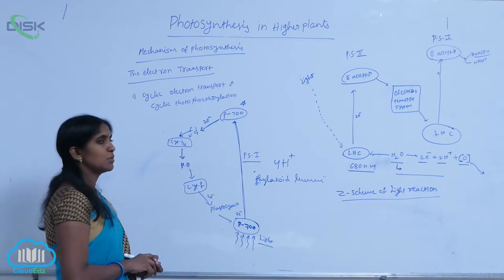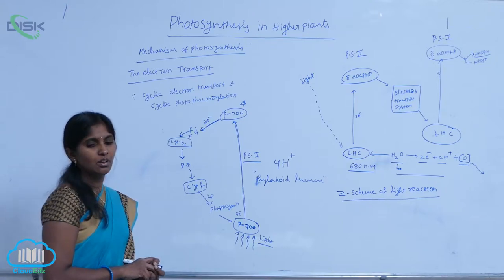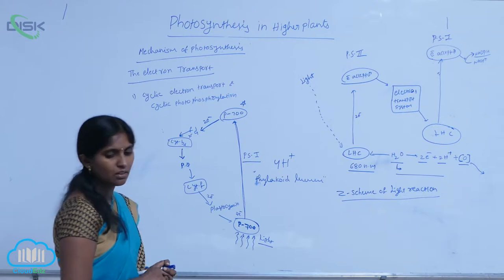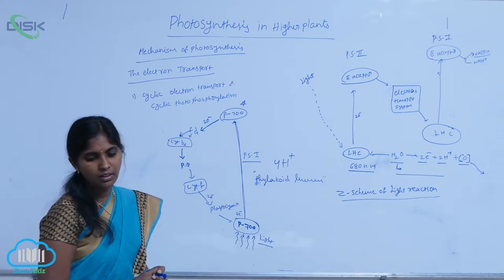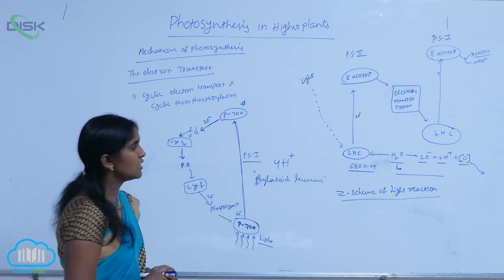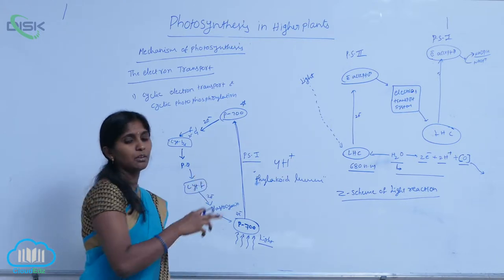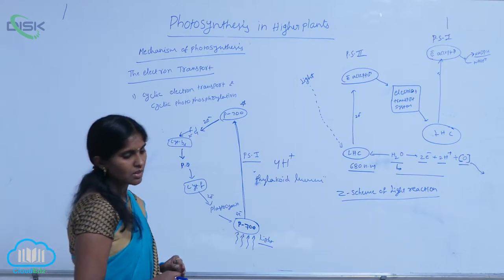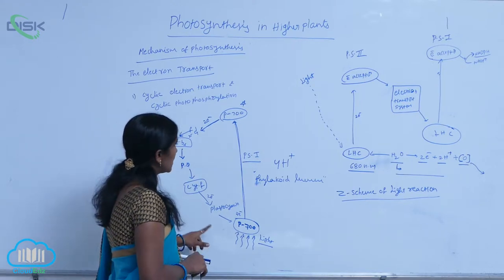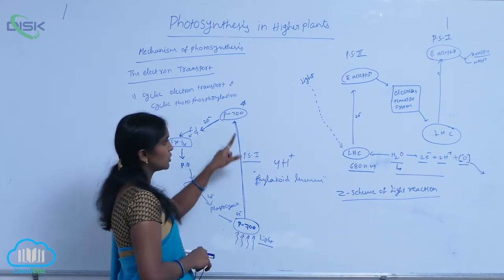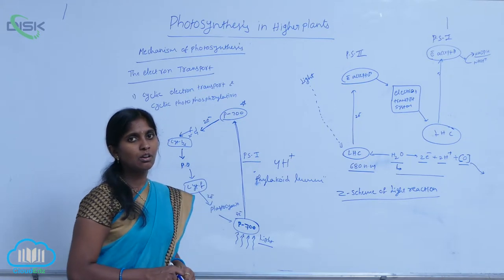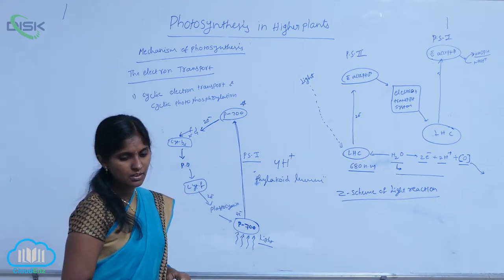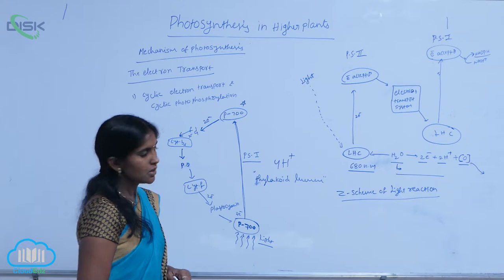During cyclic photophosphorylation, when PS1 is functional, the electrons are circulated within the PS1 system — photosystem 1. Phosphorylation occurs due to the circulation of electrons within the system.